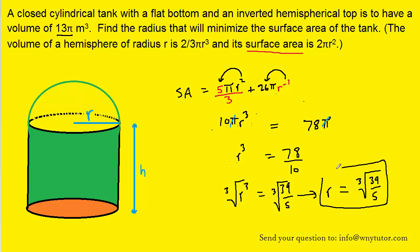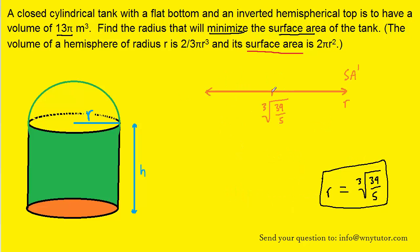Now that is indeed the value for r. It's actually known as a critical value. We haven't yet proved that that value actually minimizes the surface area, but one way to show that it indeed does is to use the first derivative test. Now in that test, we simply plot the critical value in the middle of a number line, and then we choose a value that's less than the critical number and also greater than the critical number, and we plug it into the first derivative. Now it turns out that the cube root of 39/5 is approximately 1.98. So on the left side, we can choose 1 to plug into the first derivative, and on the right side, we can choose 2.